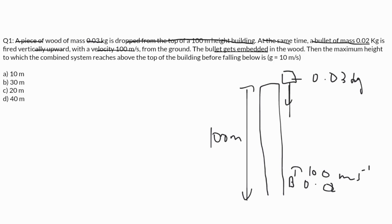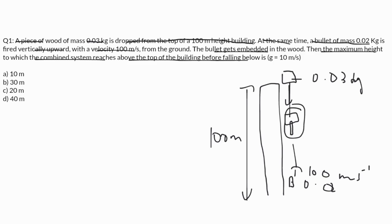When the wood goes down and the bullet goes up, the bullet gets embedded in the wood. The question asks for the maximum height the combined system reaches above the top of the building before falling below. The bullet travels upward at 100 meters per second at a very high speed.